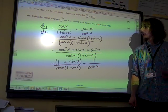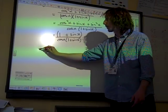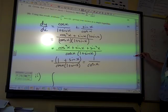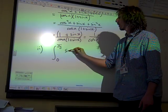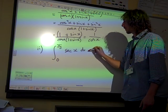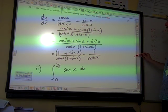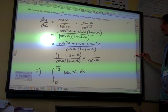Part 2. Using this result, evaluate this integral. So in part 2, we've got the integral from 0 to pi by 3 of sec x dx. Using this result.